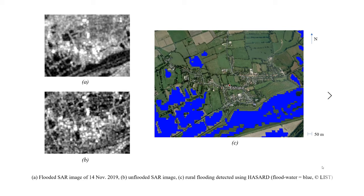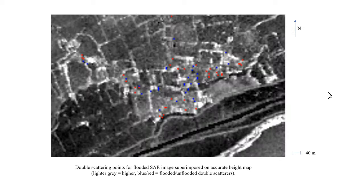In this slide, A shows the flooded SAR image of the 14th of November, B shows the unflooded SAR image, and C shows the flooding in the rural areas surrounding the village, detected by the hazard system looking for low SAR returns in flooded areas. There was little flooding found in the urban area, because SAR returns in the flooded image were high there, and urban flooding was identified using double scattering between flooded roads and adjacent building walls.